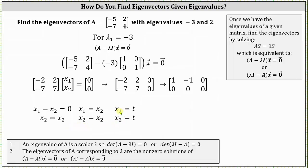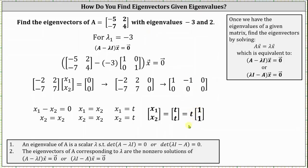Notice both x1 and x2 are equal to t. Therefore we can say all the eigenvectors x are the vectors in the form of t, t, or t times the vector one, one, which indicates the eigenvectors are all the scalar multiples of the vector one, one. Remember an eigenvector can't be the zero vector, and therefore t can't equal zero.